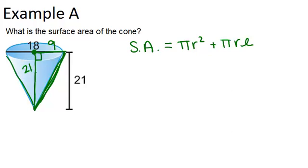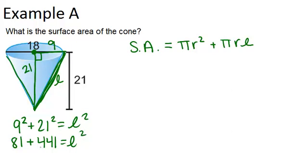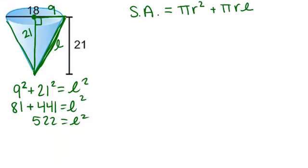We can see that this is a right triangle, so we can use Pythagorean theorem to solve for L. We'll do 9 squared plus 21 squared equals L squared, and simplify this to solve for L. 9 squared is 81, plus 21 squared, which is 441, equals L squared. So that means 522 equals L squared, which means that L, the slant height, is about 22.85.